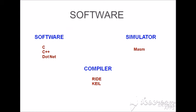The software languages used for embedded systems are C, C++, .NET, and Python, which can be used for dumping programs into the Raspberry Pi. Simulators like MASM are available, and compilers are available for IDEs such as Keil, MPLAB, and Arduino.